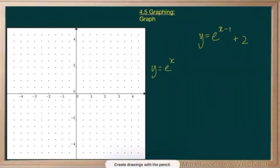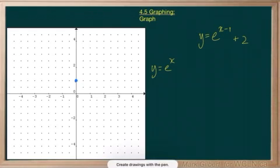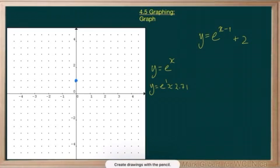There are a couple of important points here. First, if x is 0, we get 1. If x is 1, e to the 1 is about 2.71, so we can approximate that on our graph. There we go — that's about 2.71.